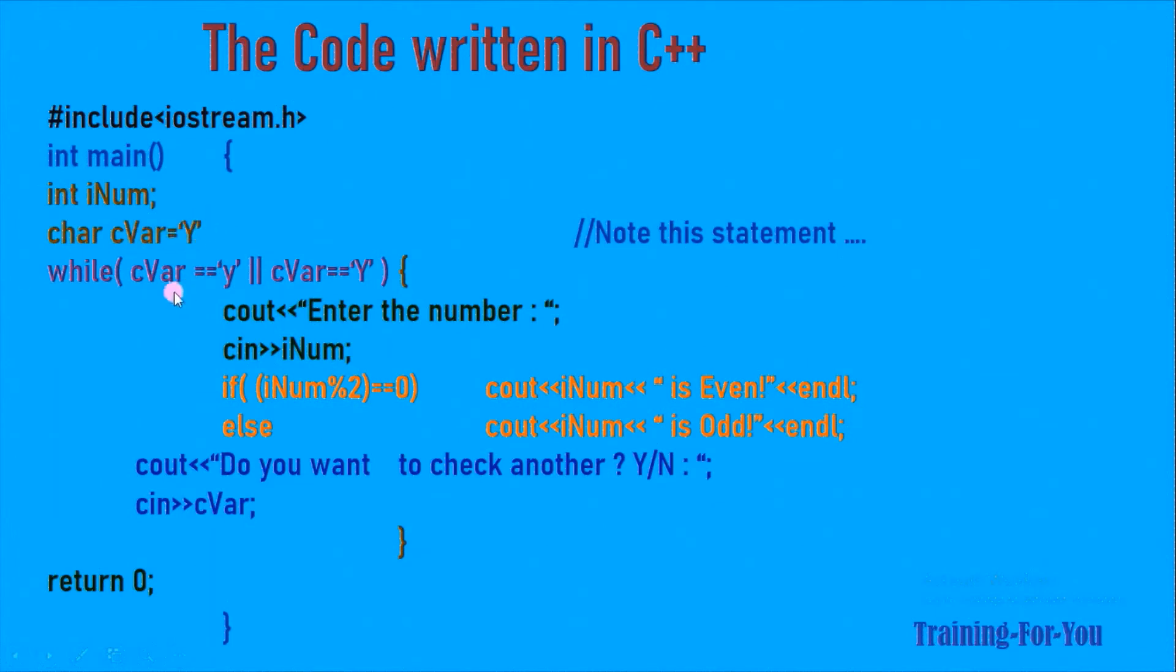This is the while loop: while followed by the condition. Here we have kept the condition such that if cvar is small y or capital y, then the condition will be true and the control will enter into the loop, ask for the number and check whether it is an odd number or an even number and will display the message accordingly. After that it will ask the user whether he wants to check another number or not. If the user enters anything other than y, this condition will be false and the loop execution will stop.